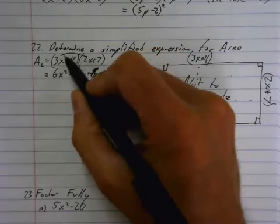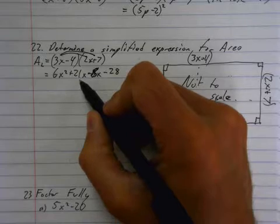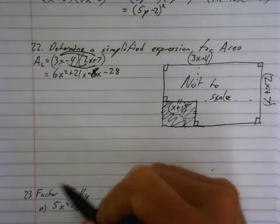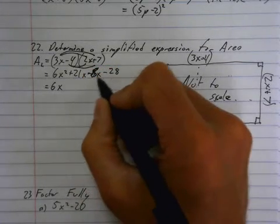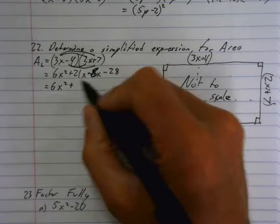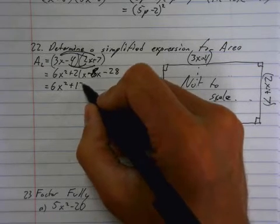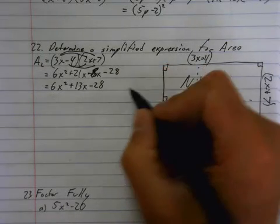So, 3x times 2x, so I multiply that. There's my 6x squared. Then I multiply that and get my 21x. Then I multiply that, get my negative 8x. Then I multiply that, get my negative 28. And then I'm going to simplify those two in the middle, so it's 6x squared plus 13x minus 28. Okay. There's my area large.